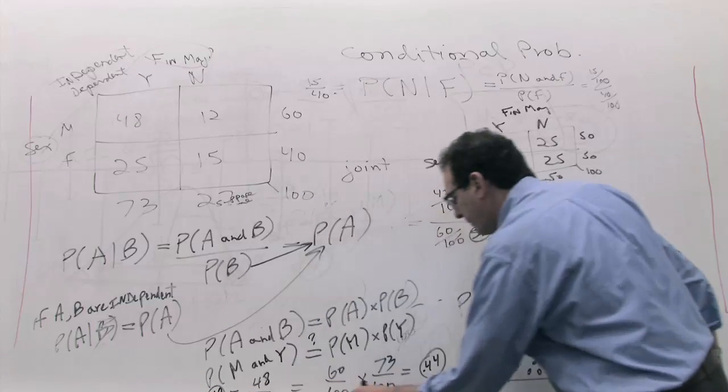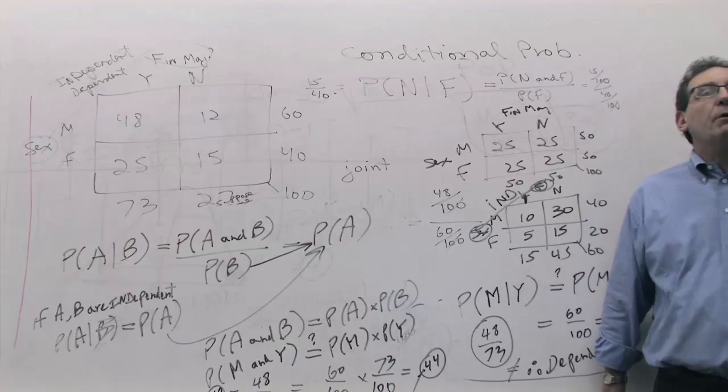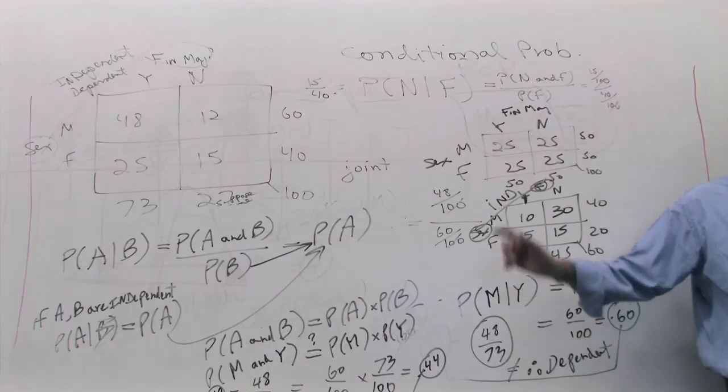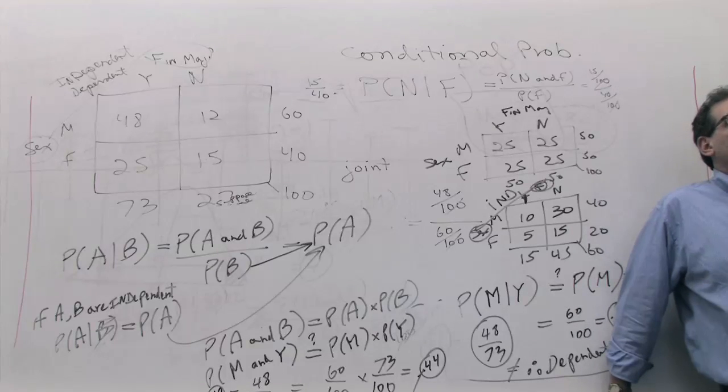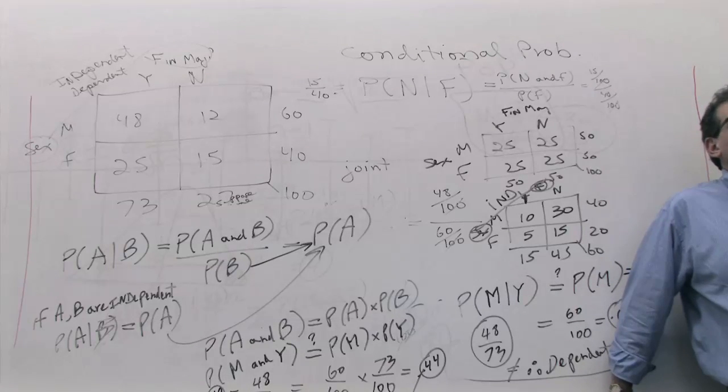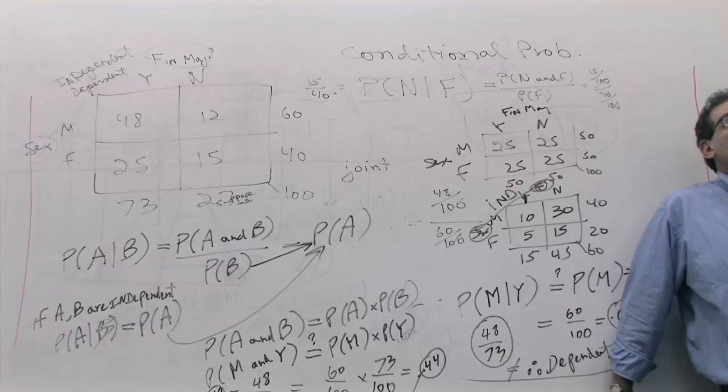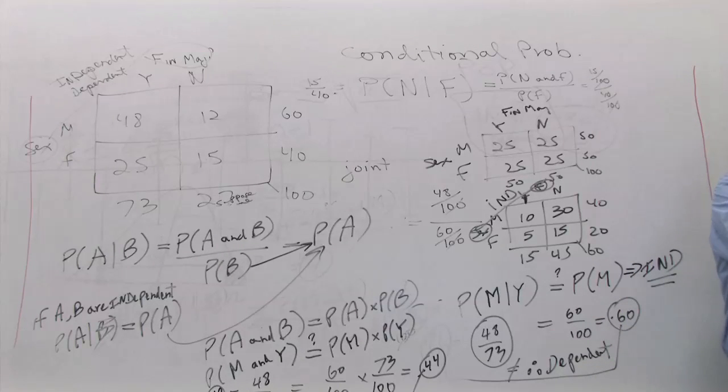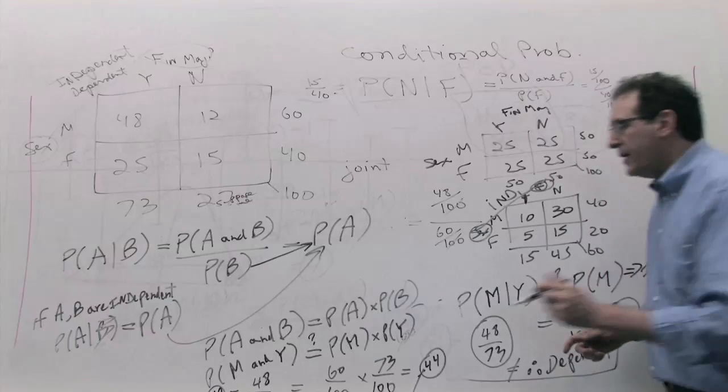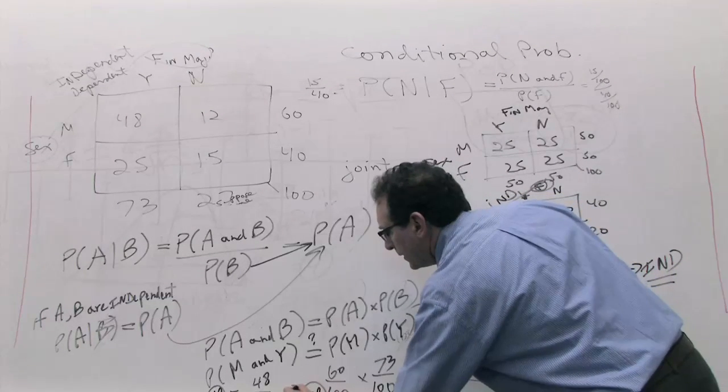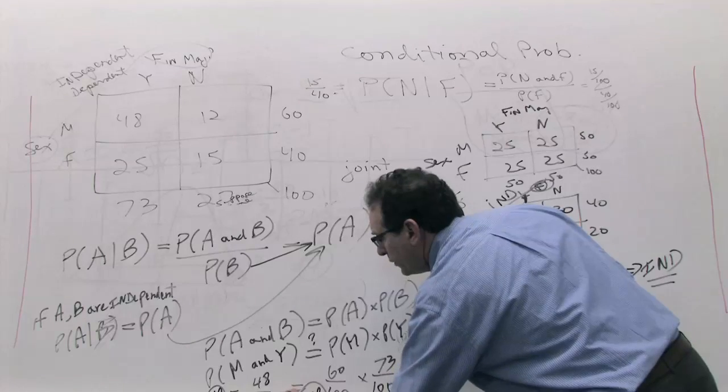Now, are the two numbers the same or different? Well, they're close, but they're not the same. So, since they're not the same, what do we just prove? That the two variables are independent or dependent? We just proved dependent. Remember, if they're exactly equal to the tenth decimal place, then they're independent. But if they were slightly different, then the answer is dependent. They're not equal, therefore dependent.